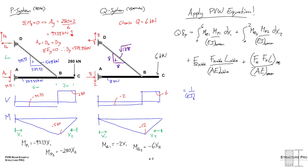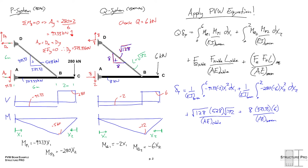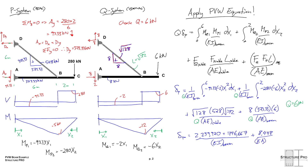Substituting all values and moving Q to the denominator on the right side, our vertical deflection at C equals (2,239,920 + 746,667) / EI_beam, plus 8,448 / (EA_cable), plus 2,987 / (AE_beam). Remember that E, I, and A must all be in kilonewton-meter units consistent with the calculations.